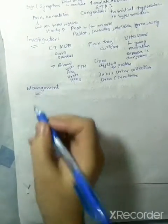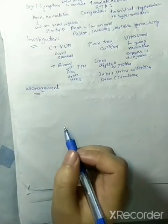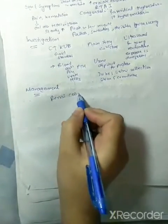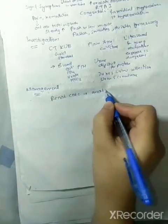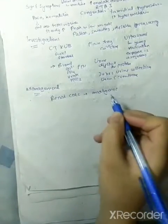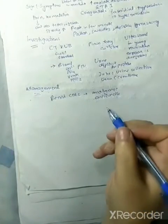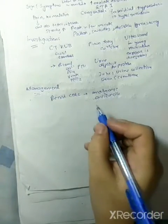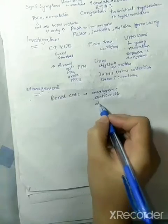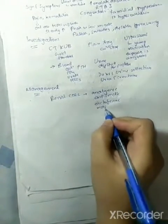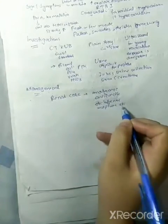Now we will discuss management. For renal colic there is pain, so we will give analgesics and anti-emetics as there is vomiting also. The drugs are diclofenac, morphine, etc. Similarly,